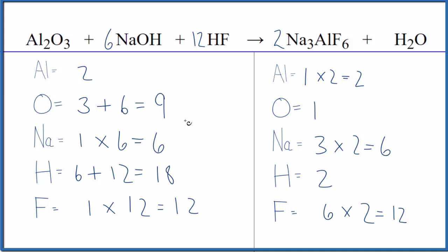But I think we're close. If we put a nine in front of the water here, two times nine, that's 18, right? Those are balanced. And one times nine, that gives us nine oxygen atoms. And those are balanced. So we're done.